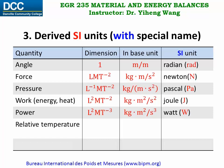For relative temperature, its dimension is the same as temperature theta, and its base unit is Kelvin, but we have this special name for relative temperature: degree Celsius. And of course there are other examples.